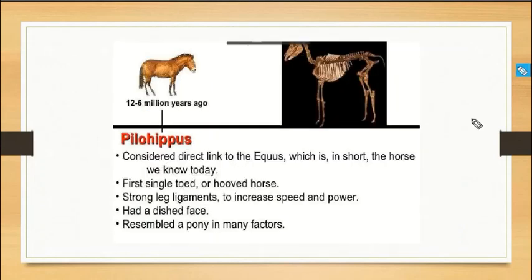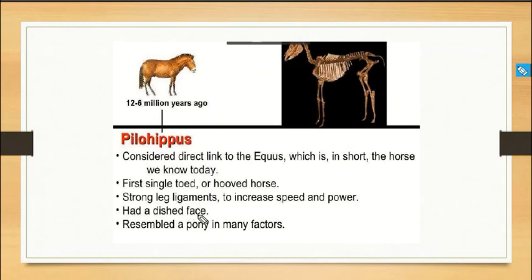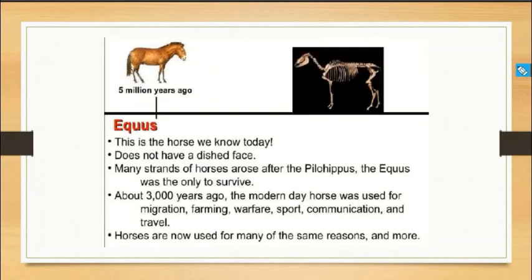After about 12 to 6 million years ago came Pliohippus, considered a direct link to Equus. The relationship was short but significant. It had a single toe — a hoofed horse. It had strong leg ligaments and was very powerful in speed. It had a dished face and was pony-sized in stature.